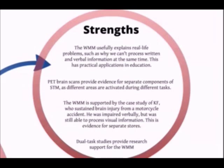The working memory model is also supported by the case study of KF, who sustained a brain injury from a motorcycle accident. His short-term memory was impaired verbally, but he was still able to process visual information, which demonstrates that there are two separate stores in short-term memory. Dual task studies, such as the one conducted by Gathercole and Baddeley, also provide research support for working memory.